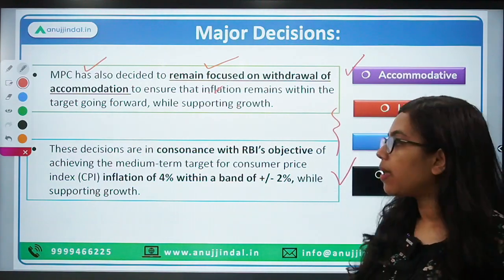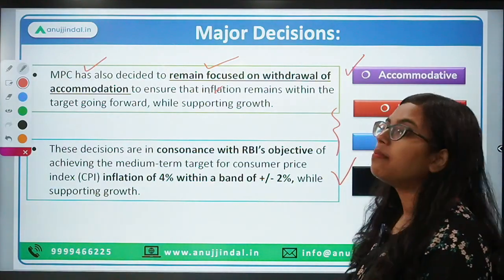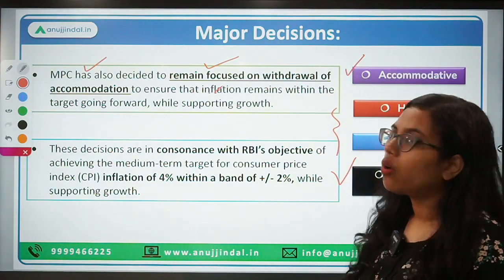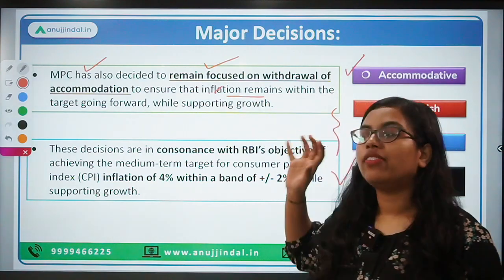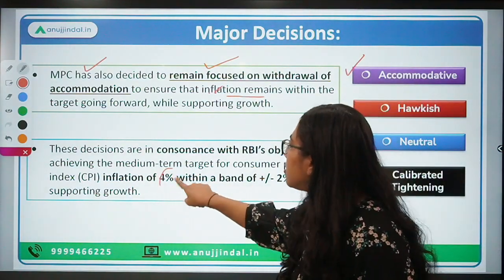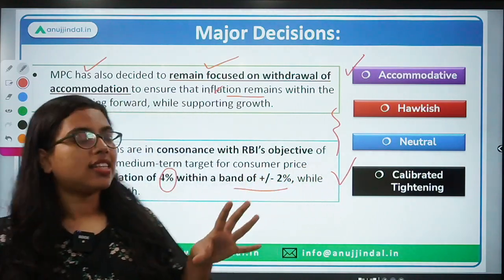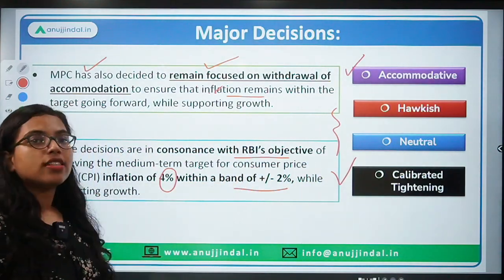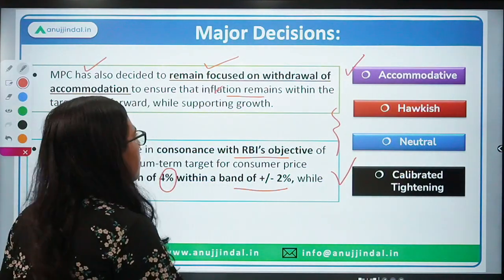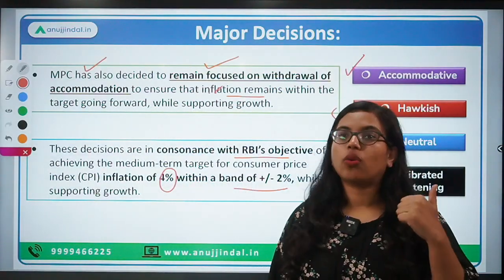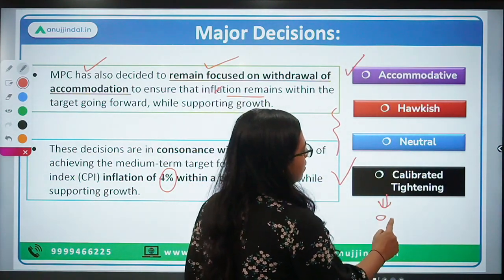During the COVID-19 pandemic, demand slowed down and RBI took an accommodative stance. But since inflation has been eating up our economy, the stance of the MPC has now been to remain focused on withdrawal of accommodation — that is, calibrated tightening. The stance is calibrated tightening, in order to ensure that inflation remains within the target of four percent with a band of plus or minus two percent.